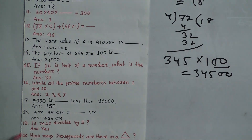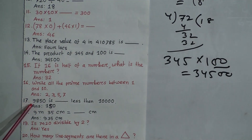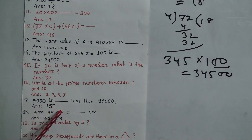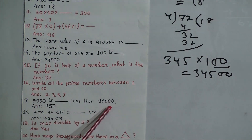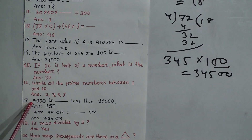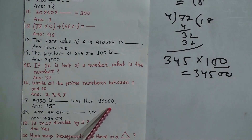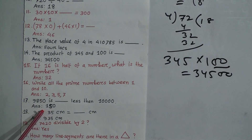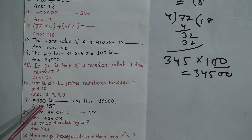Question 17: 9,850 is how much less than 10,000? Subtract 9,850 from 10,000 and you get 150. So the answer is 150.